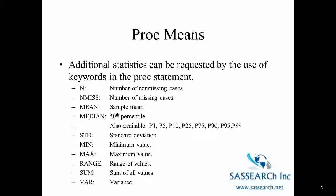There are additional statistics that can be requested for PROC Means by using one of these keywords in the PROC statement. N is the number of non-missing cases — for example, if you have a variable age and your dataset has 100 observations but only 90 of them have a value of age entered, then the N would be 90, even though you have 100 observations read into your dataset. Another option is N-miss, which gives the number of missing cases. You can also request the mean, the median, the range, and the sum, which sums up all observations for a particular variable.